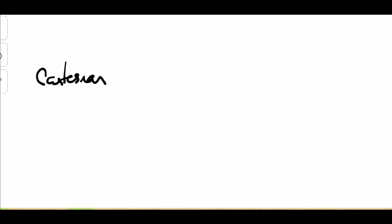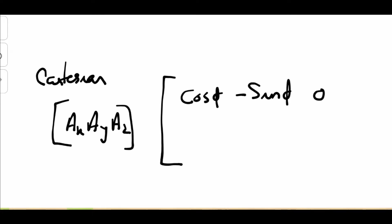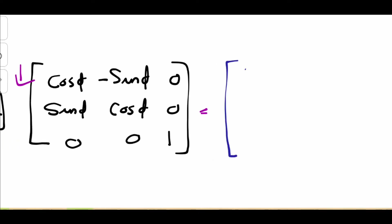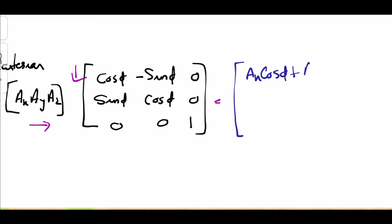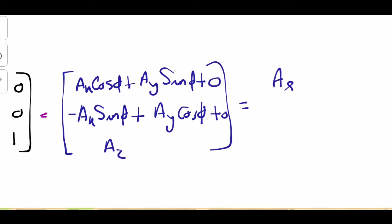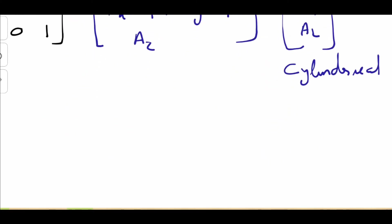We have now found a way to transform a vector from Cartesian to cylindrical. We multiply [Ax, Ay, Az] by the transformation matrix: [cosφ, sinφ, 0; −sinφ, cosφ, 0; 0, 0, 1]. This gives Ar = Ax cosφ + Ay sinφ, A-phi = −Ax sinφ + Ay cosφ, and Az = Az. This is the transformation into cylindrical coordinates.